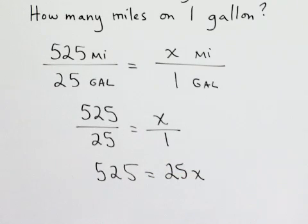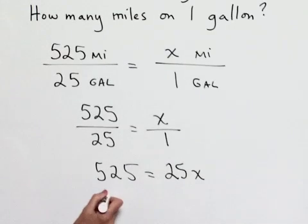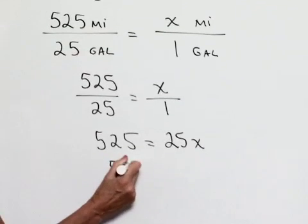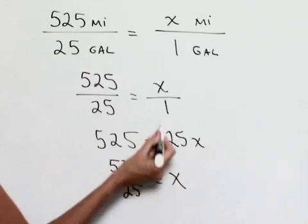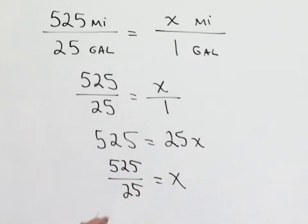Notice that at this point we're at the same issue that we had previously in that we have to divide both sides by 25 to come up with a value of x. So we'll end up with 525 divided by 25 equals x. So notice we could have done this without this middle step of cross products in this case.